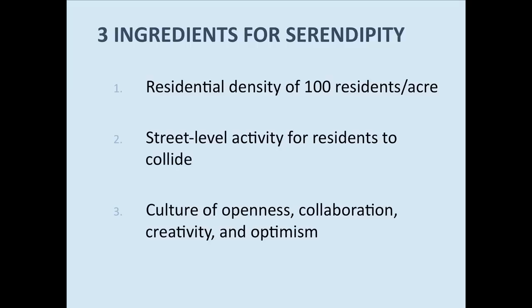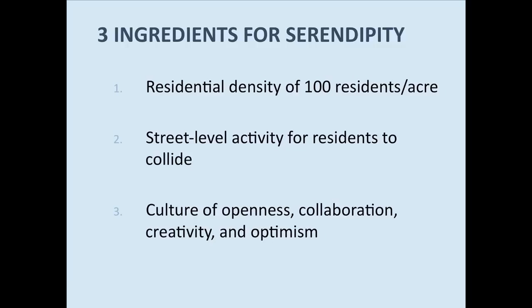The three ingredients that the book cites, is you need a residential density of 100 residents per acre, combined with street-level activity, so all those post-it notes, places like Natalie's and those different bars and coffee shops, for the residents to collide. And then the third part is probably the most difficult, this culture of openness and collaboration and sharing, which we already have at Zappos, and coincidentally already existed in this Fremont East area of Downtown Vegas, as well as other parts of Downtown.